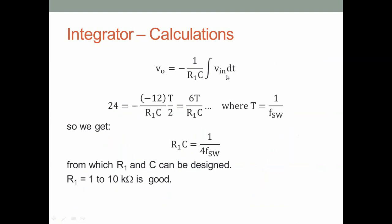Now let's do the calculations. The input is ±12 V, so assuming it is −12 V and integrating over half the square wave period T/2 — where T = 1/f_sw — we get the ramp amplitude as 6T / (R1·C). Over half a period the output should ramp from −12 to +12 V, a swing of 24 V. Solving this equation gives R1·C = 1 / (4·f_sw).